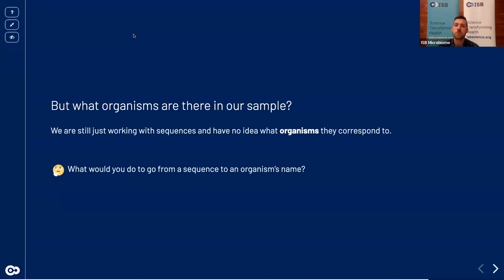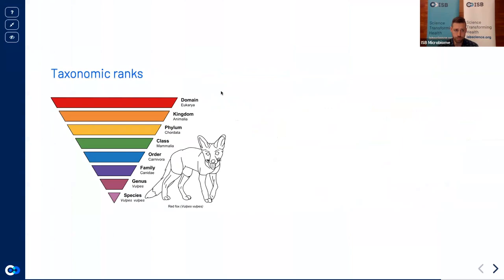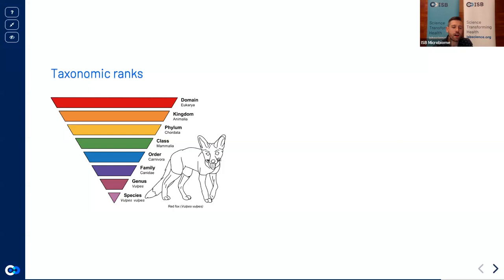Before the break I asked you to think about how you would go from a representative sequence — one of our ASVs — to the identity of an organism. Before we answer that, let's have a quick refresher on taxonomy. We have hierarchical ranks that get more and more specific. At the species level there's very little genetic diversity; at each level above species we see a bit more genetic divergence. For bacteria this can be challenging, and we can get even more granular down to the strain level, which is essentially any given genome.